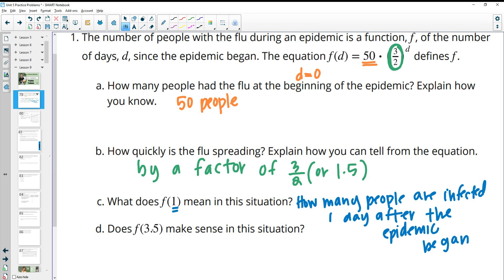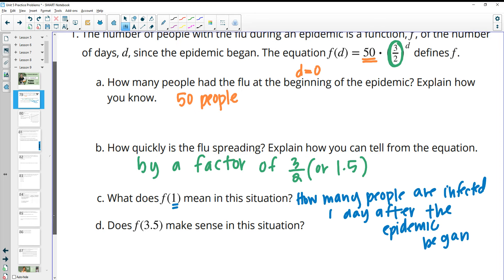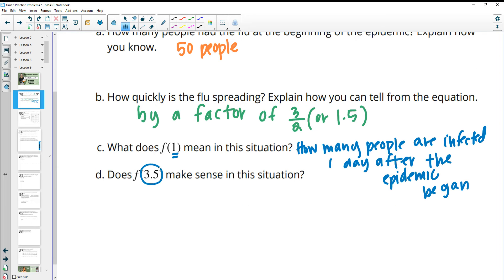So what does F of 1 mean in this situation? F is the number of people who have the flu and then the number inside is the days. So this represents how many people are infected one day after the epidemic began. And then does 3.5 make sense in this situation? So what this is asking us is, does 3.5 make sense for the number of days? And yes, it can. That's just halfway through the fourth day, meaning like at noon. So yes, this would be noon on the fourth day.